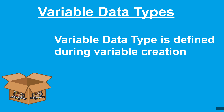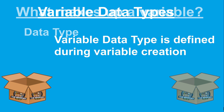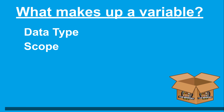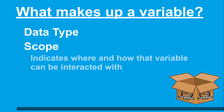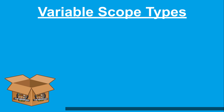The variable data type is defined when creating a variable, which we will be going over shortly. The second piece of a variable is the scope. The scope of a variable indicates where and how that variable can be interacted with. In WebCore, there are three variable scopes that you can create a variable under. The first is local.